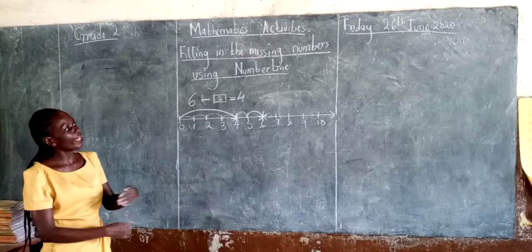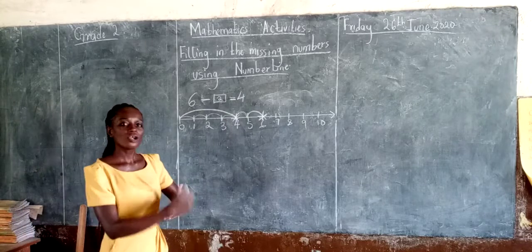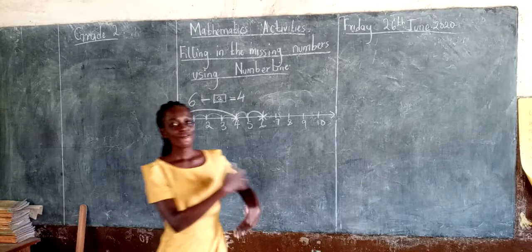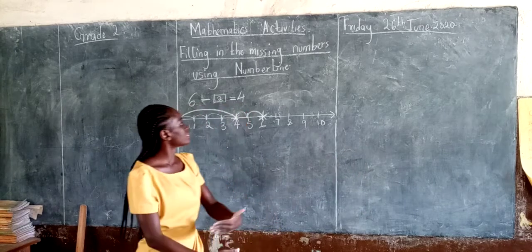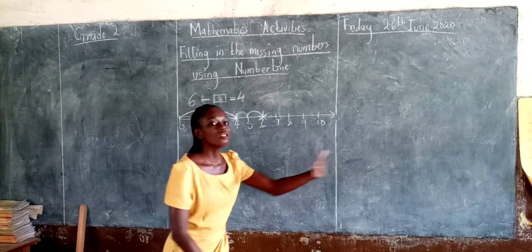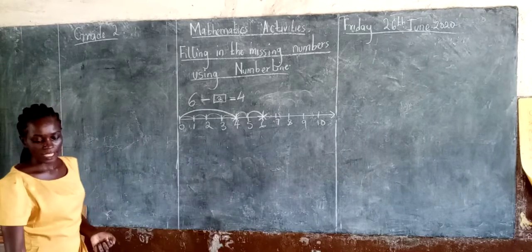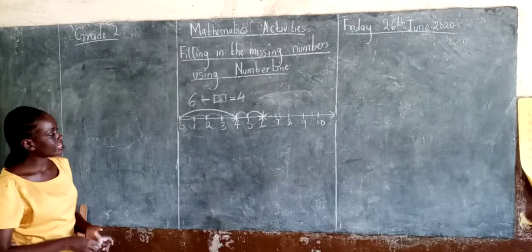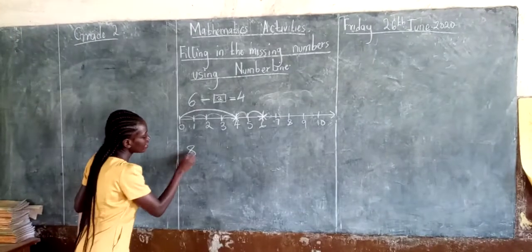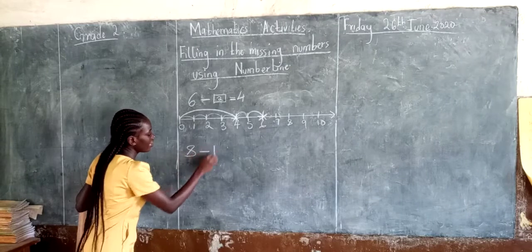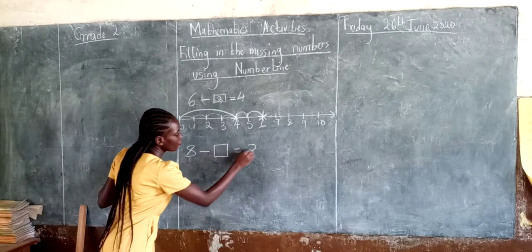So when we were doing addition, we were counting going forward. Now because it is subtraction, we count going backward. Second example: 8 take away dash is equal to 3.